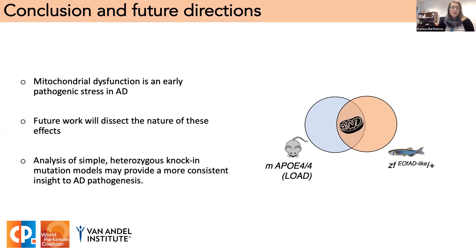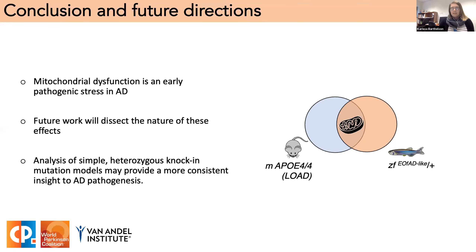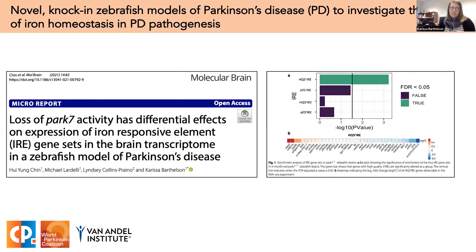In summary, the effect common to different EOFAD mutations in different genes is their impact on the oxidative phosphorylation pathway, suggesting mitochondrial stress is an early cellular stress in both EOFAD and late-onset AD. We have now applied for funding to dissect the nature of these effects. I believe the way forward to finding an effective therapeutic for Alzheimer's is to understand the disease in the context of simple knock-in models, which will probably give more consistent insight into the early changes that eventually lead to Alzheimer's decades later. We've also started a new project using a similar approach to understand the genetics of Parkinson's disease using zebrafish.